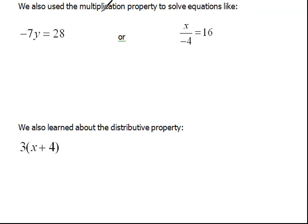We also learned about the multiplication property. So if we had negative 7 times y equals 28, we would undo this multiplication by dividing both sides by negative 7. This would leave us with y on the left and 28 divided by negative 7 is negative 4 on the right hand side.